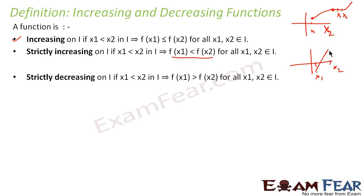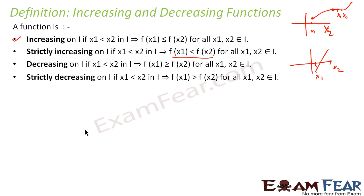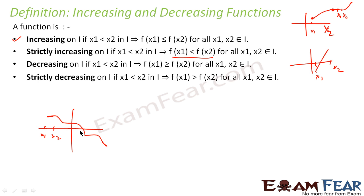Similarly, we have a strictly decreasing and a decreasing function. For a decreasing function — where some part is equal and some part is decreasing — if you have two points x1 and x2, then f(x1) has to be greater than or equal to f(x2). In case of strictly decreasing function, if you take any points x1 and x2, then f(x1) has to be strictly greater than f(x2) — there is no equal to. It is always f(x1) greater than f(x2).